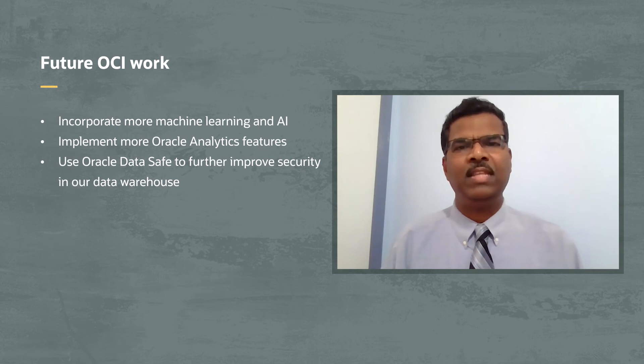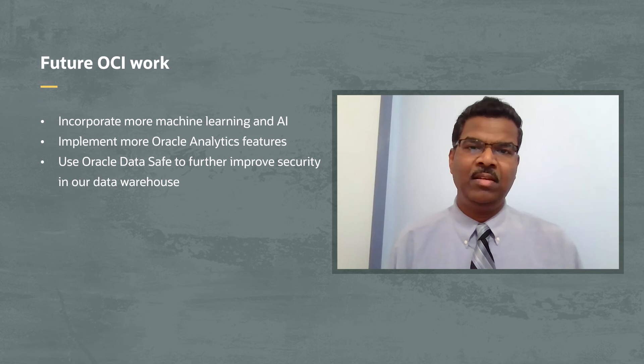We are looking at a couple of things. Machine learning is one — we want to integrate machine learning and we have seen those nice features in OAC reports and dashboards. We have also recently integrated DataSafe, which was really helpful with auditing. Having that DataSafe is helping us identify good auditing functionality on the warehouse. And of course, AI and machine learning are some other things we are very interested in, and we are working with our Oracle partners as well.